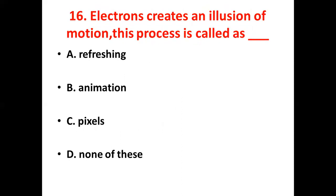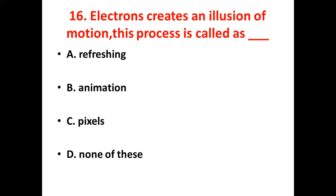16th bit: Electrons create an illumination on the monitor. This process is called as dash. Option A: Refreshing. Option B: Animation. Option C: Pixels. Option D: None of this. Answer — Option A: Refreshing.